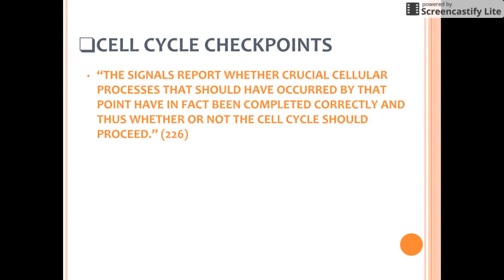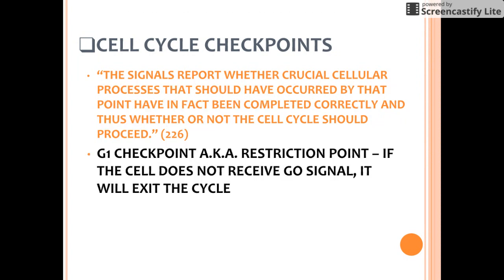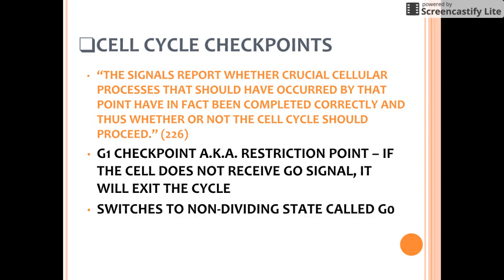We've talked a little bit about cell cycle checkpoints, but we're going to go into those more. Many signals registered at the checkpoints come from cellular surveillance mechanisms. These signals report whether crucial cellular processes that should have occurred by that point have in fact been completed correctly, and thus whether or not the cell cycle should proceed. For many cells, the G1 checkpoint, dubbed the restriction point, seems to be the most important.